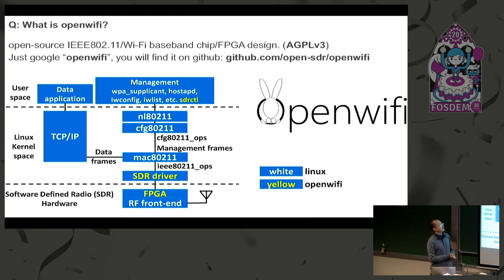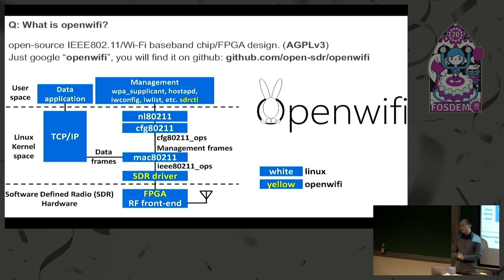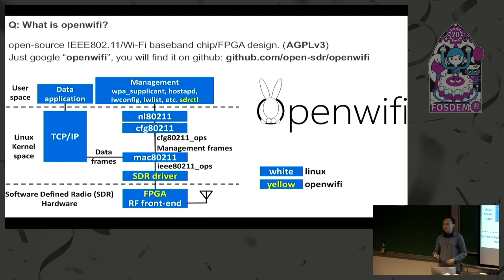Why do we say it's a chip design or Wi-Fi chip? Because it works not like USRP or GNU Radio stuff — it really works like a commercial Wi-Fi chip. The commercial Wi-Fi chip offers you two things: first, the silicon — the chip itself; second, the driver, most of the time the Linux driver. You insert the dongle, the driver is auto-loaded or you install it. That's how commercial Wi-Fi chip works.